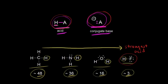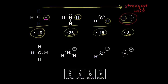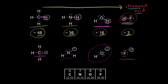Now let's think about the conjugate bases for all four compounds. If we take this proton from methane, these electrons are left behind on the carbon, so the carbon gets a negative one formal charge. For ammonia, if we took this proton, these electrons are left on the nitrogen, so the nitrogen has a negative one formal charge. For water, if we took this proton, these electrons are left on the oxygen to form the hydroxide anion as our conjugate base, with a negative one formal charge on the oxygen. And finally, if we took this proton, these electrons are left behind on the fluorine to form the fluoride anion. We already know that HF is the strongest acid, so the fluoride anion must be the most stable conjugate base.